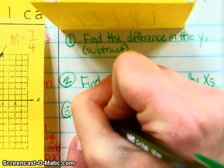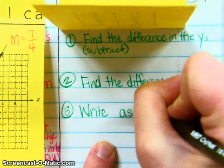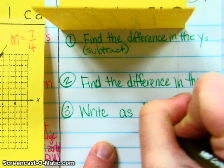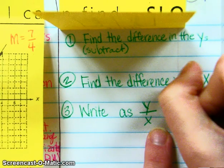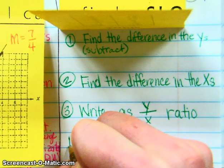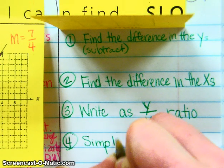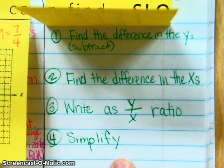Write those as change in your y over your change in your x ratio, and we're going to simplify it, but we're going to leave it improper.